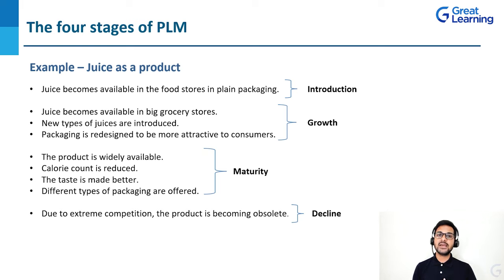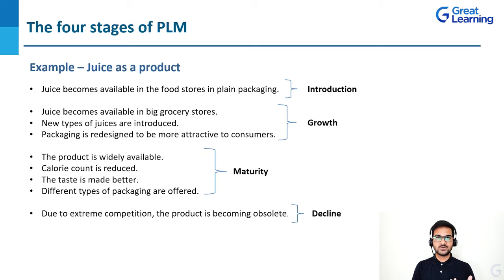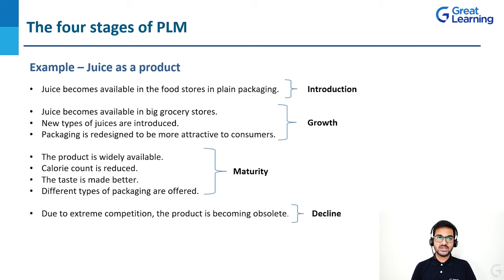Let's understand these four stages with a simple example — let's take juice as a product. First, juice becomes available in food stores in plain packaging — this is the introduction stage. Then in the growth stage, juice becomes available in big grocery stores, new types of juices are introduced such as cranberry juice, orange juice, and carrot juice, and the packaging is redesigned to be more attractive to consumers. So initially it was only in food stores with plain packaging, but now as the market space grows it is distributed to a larger set of customers.